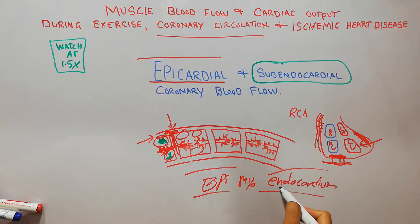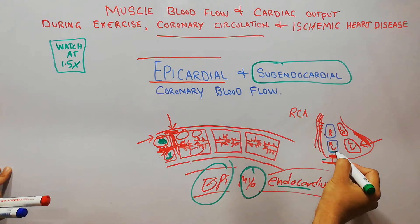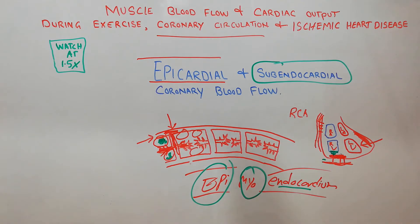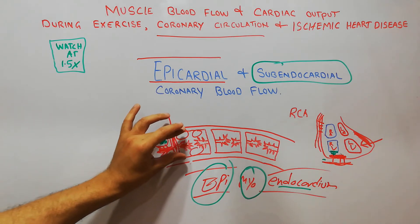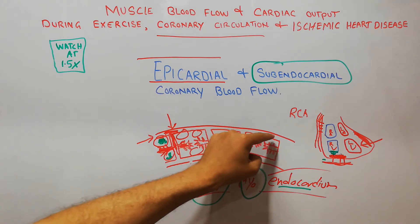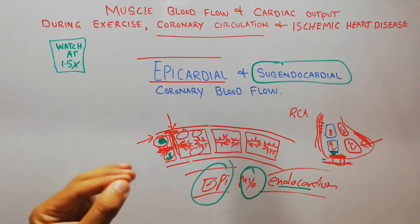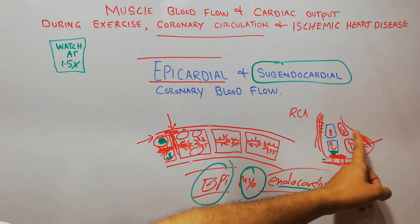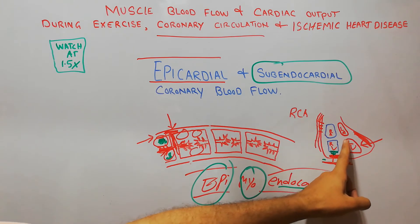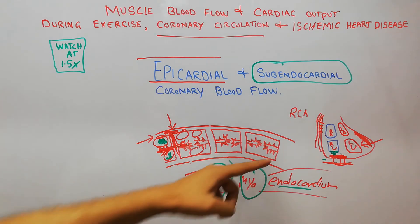The inner portion is the endocardium, the outer is the epicardium, and between them is the myocardium. Just below the inner portion — just below the endocardium — we have the subendocardial coronary blood flow. This pattern shows that blood coming to the heart arrives via the epicardial blood vessel, then goes deep inside the muscle through intramuscular branches, and supplies the subendocardial coronary blood vessels just below the endocardium.